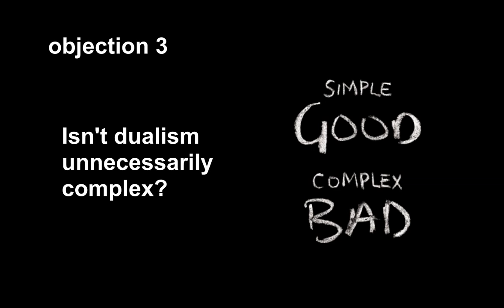Third objection. Isn't dualism unnecessarily complex? Well, it is true that we want our theories to be simple. If we have two theories, and they both explain what we observe, then we strongly prefer the simple theory. That's right, and so, if dualism about human selves and physicalism explain the same things, then physicalism is simpler, because physicalism posits that there's only one kind of thing in a human being, one kind of substance, a material substance. And there's only one kind of property, physical property. There's only one kind of event, physical event. So, physicalism about humans is simpler than dualism. You just don't bring in this hypothesis of a soul.